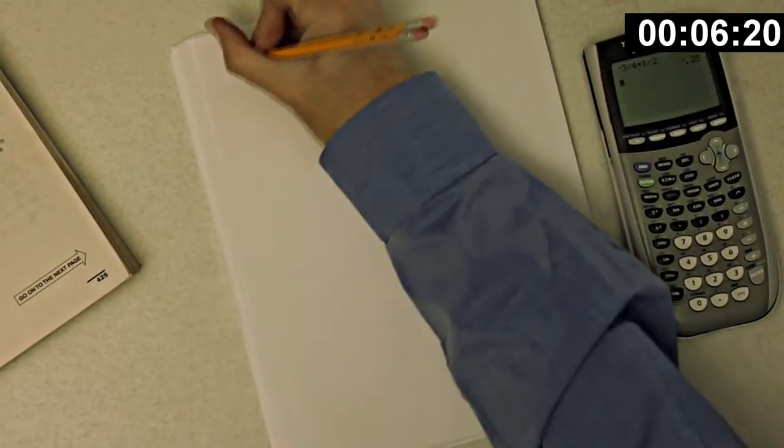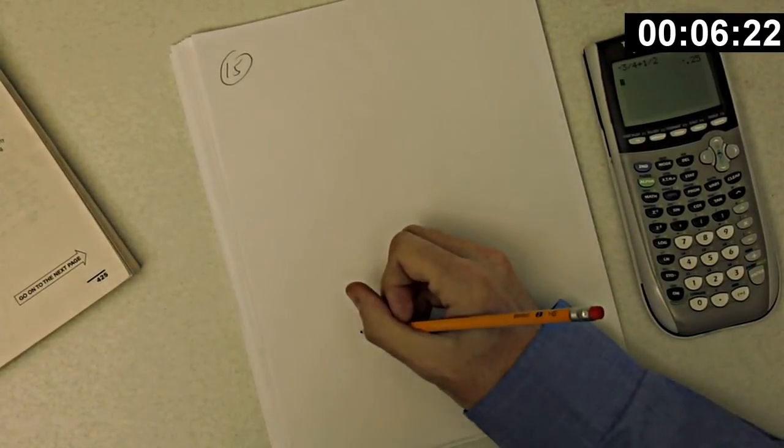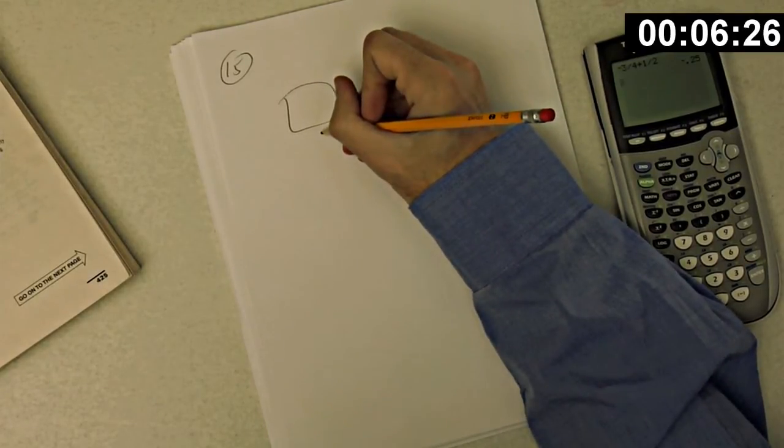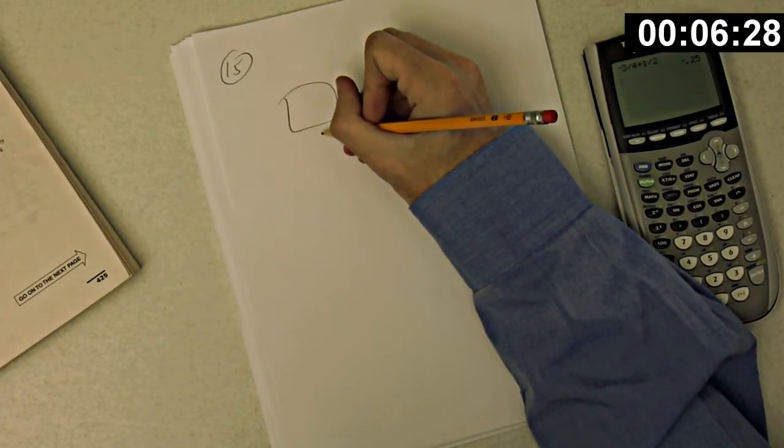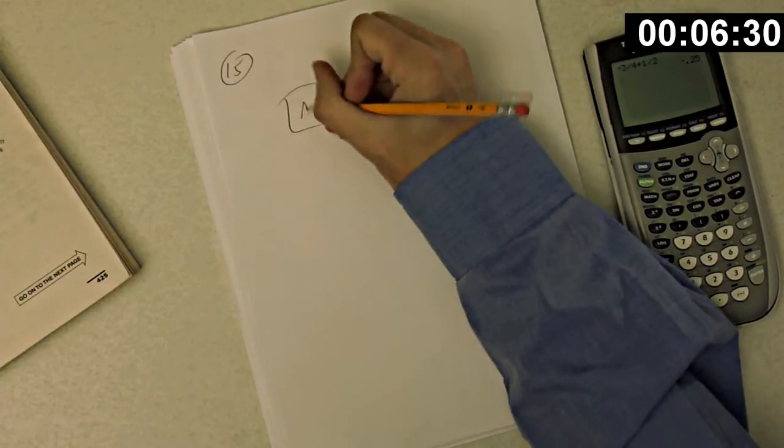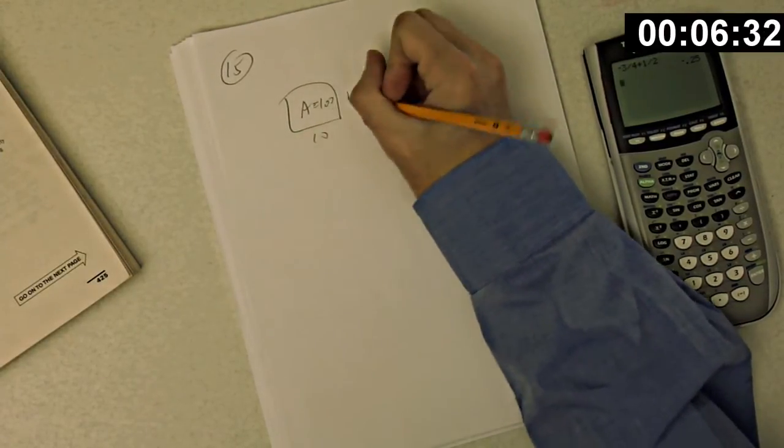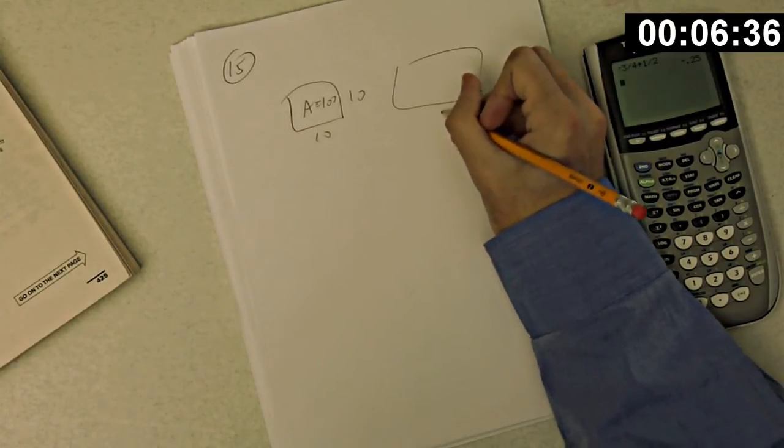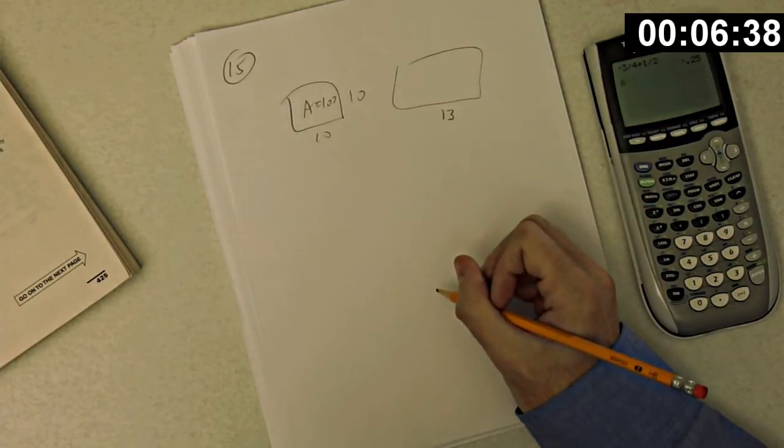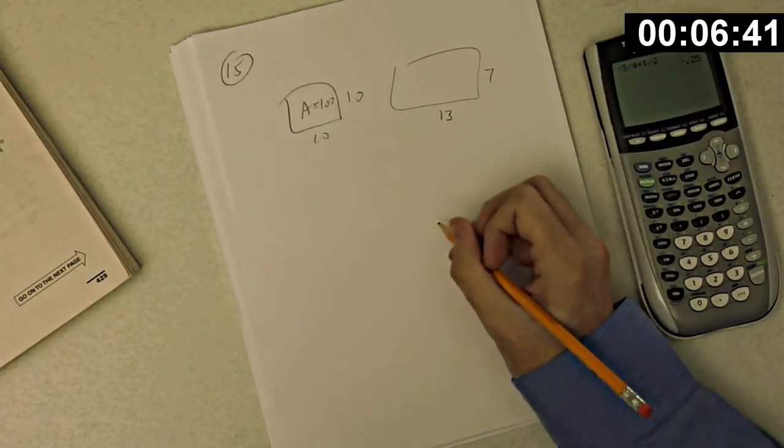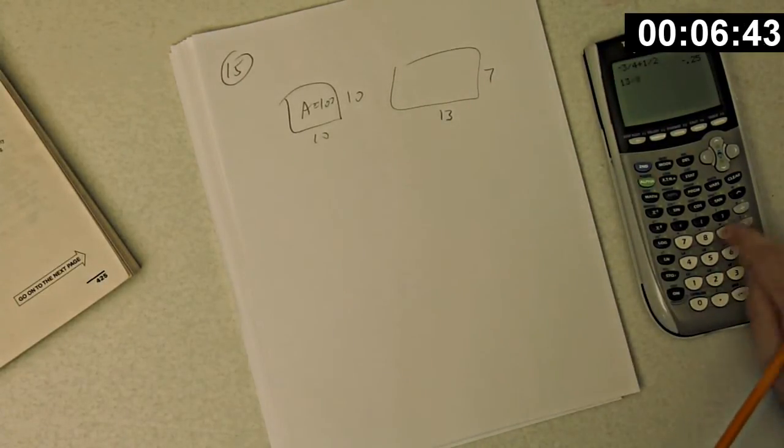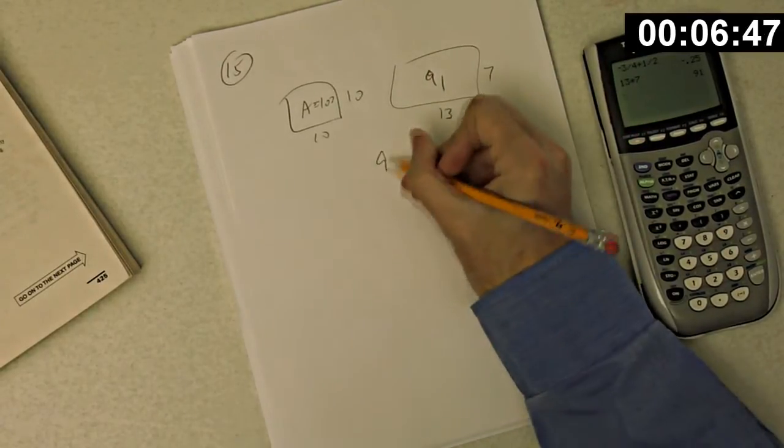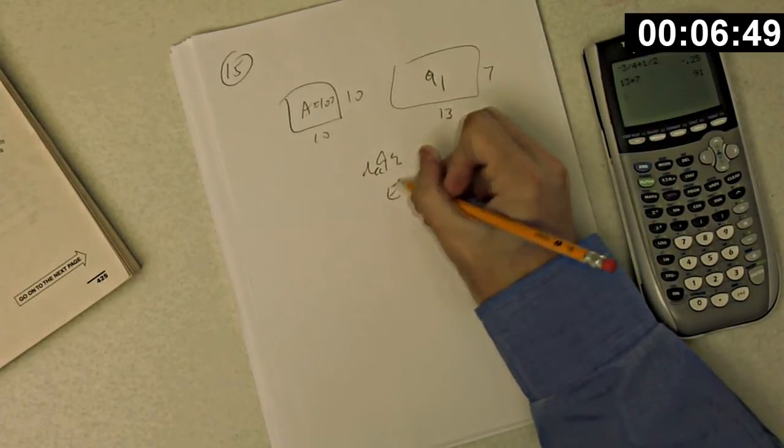Okay, number 15. If the length of a rectangle is increased by 30%, and the width of the same rectangle is decreased by 30%, what is the effect on the area of the rectangle? So let's start with a rectangle of area 100, 10 by 10. And let's increase the length by 30% to 13, and decrease the width by 30% to 7. So 13 times 7, that's 91. There's a decrease of 9%. That's choice E.